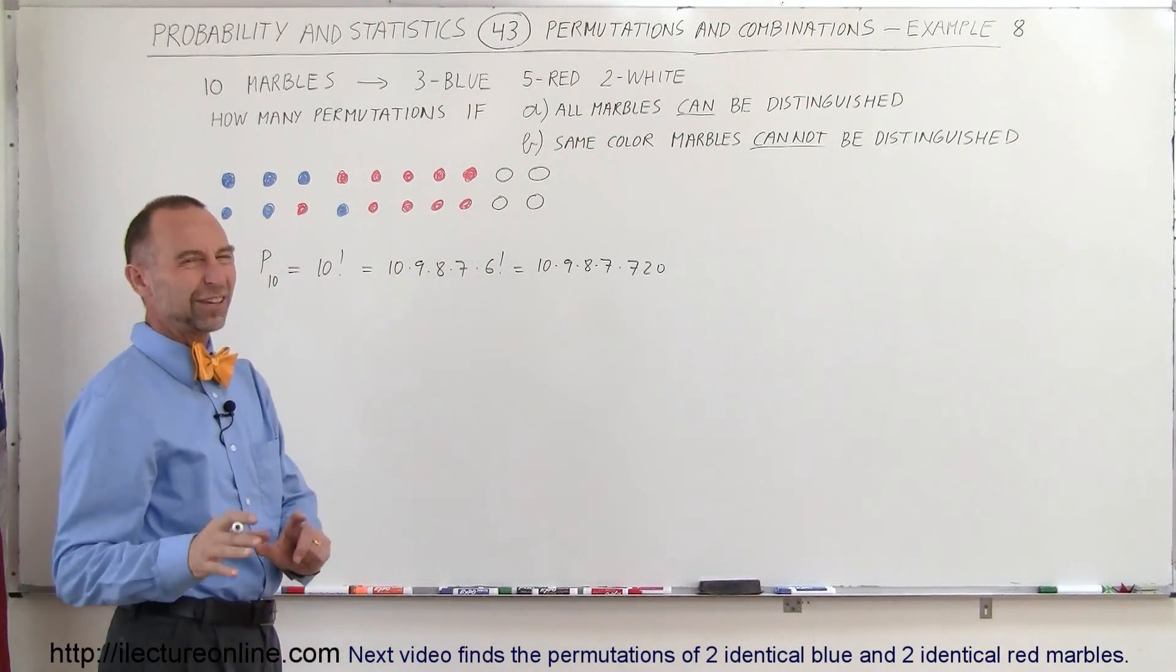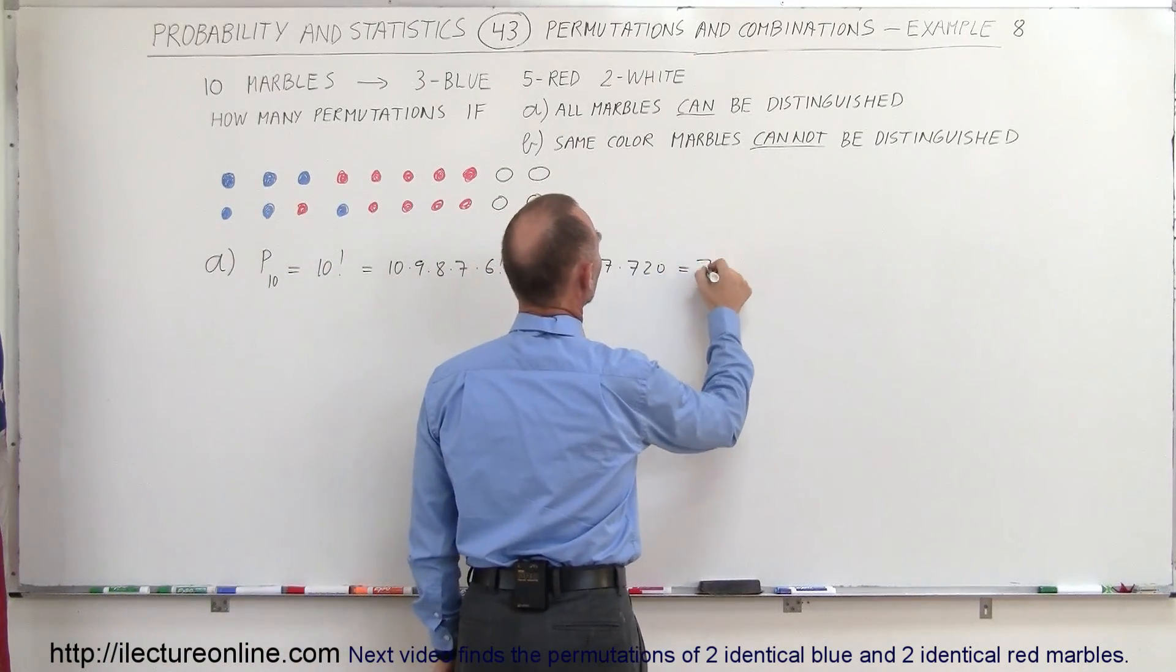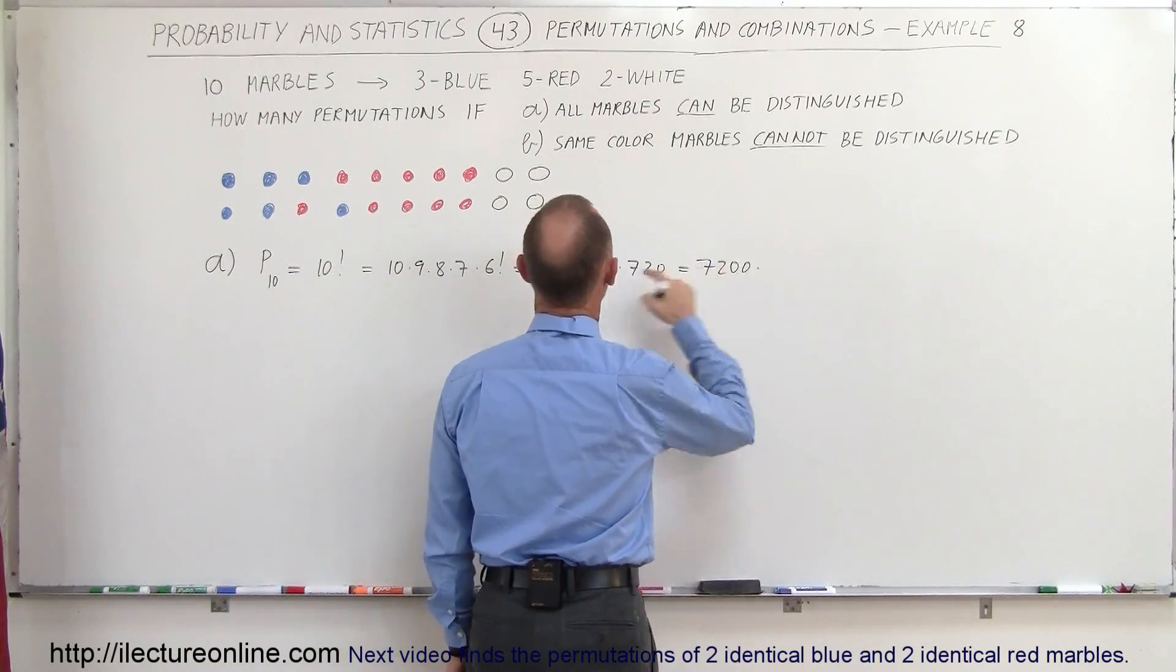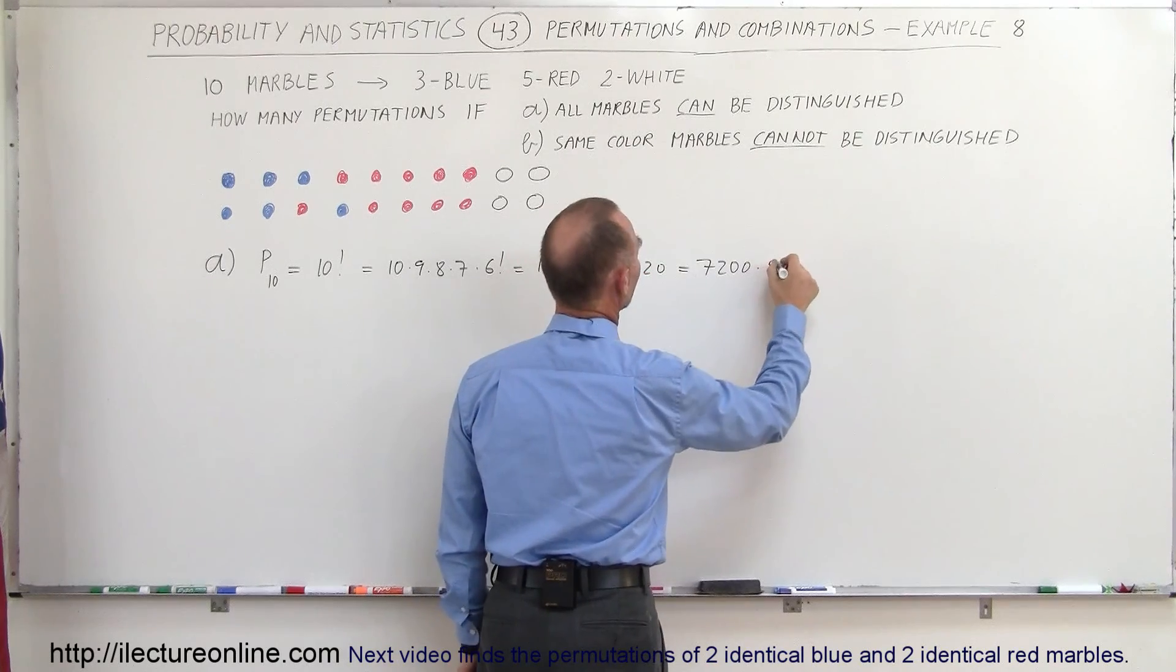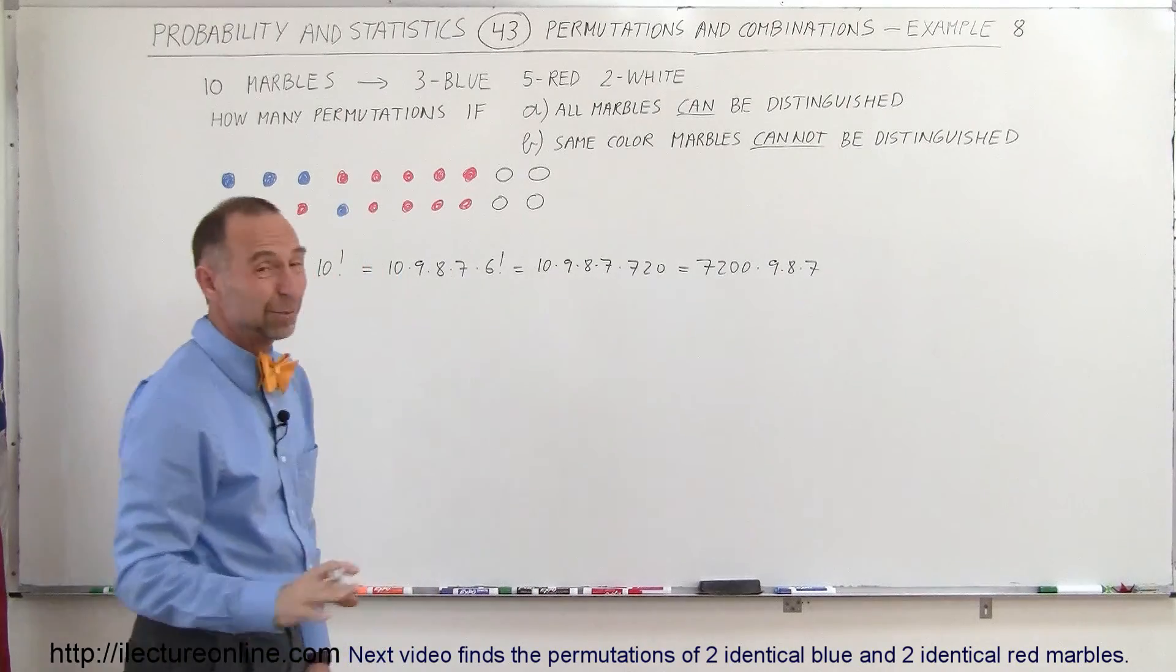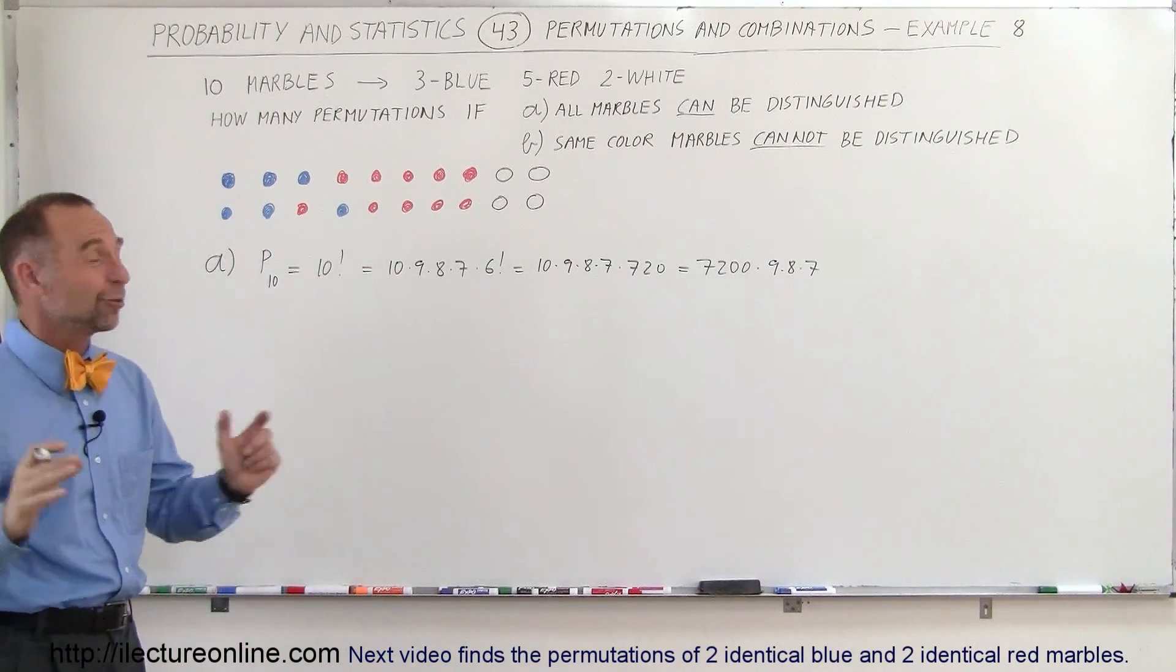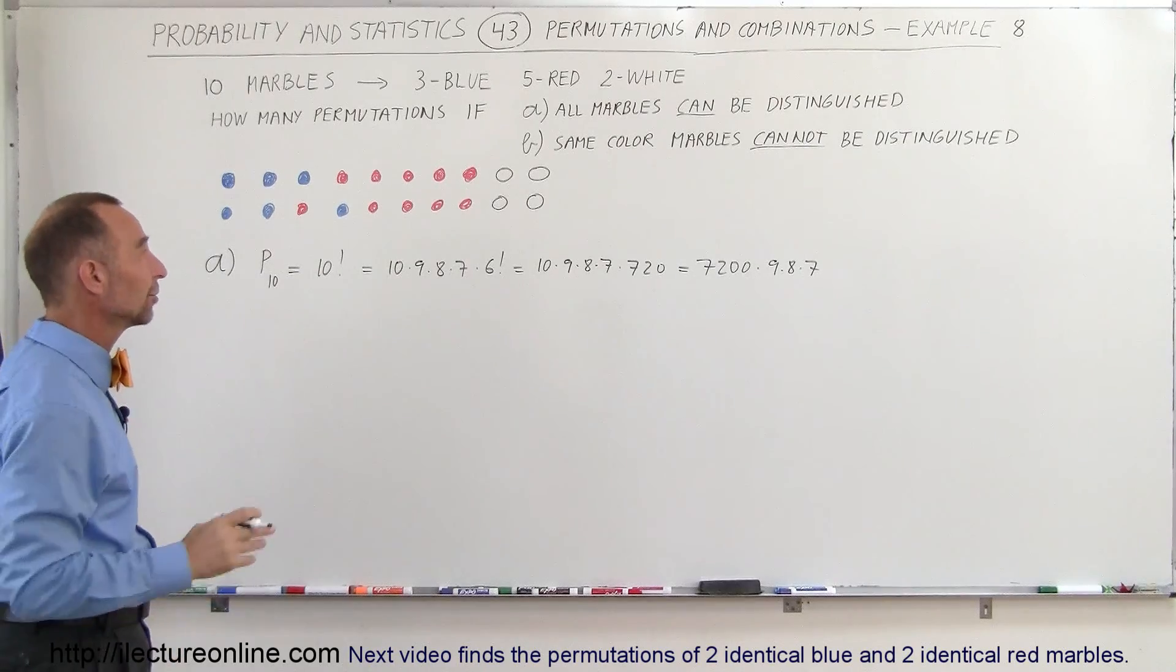So it would be equal to ten times nine times eight times seven times 720. With a calculator we can figure out what this is. It's a big number. I like to go as far as I can without using a calculator. I can multiply the ten times this, so this would be equal to 7,200 times nine times eight times seven. At this point I'll just go ahead and quit because it's getting pretty complicated. But you get the idea—it's a lot of different ways in which you can rearrange ten marbles.